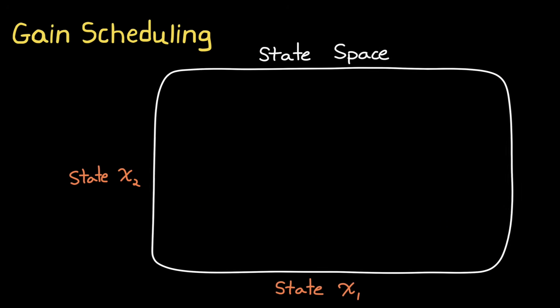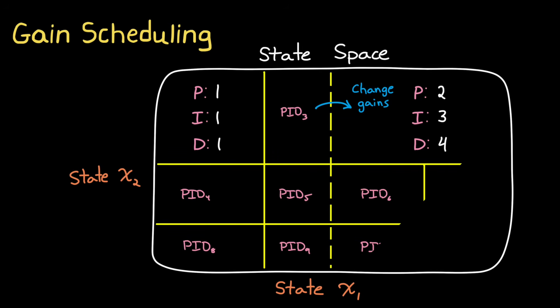Gain scheduling is where you change the gains of a controller based on the current state of the system. For example, you might have a PID controller with one set of gains for when the system is in one state, and then another set of gains for when the system crosses over into a different state. And instead of two sets of gains, you might have dozens of sets, whatever you need to break up the state space into small enough chunks that your linear controllers can handle it.